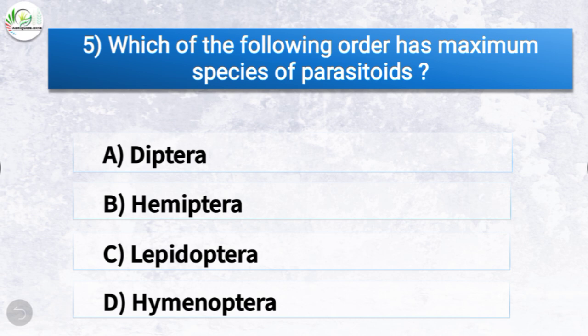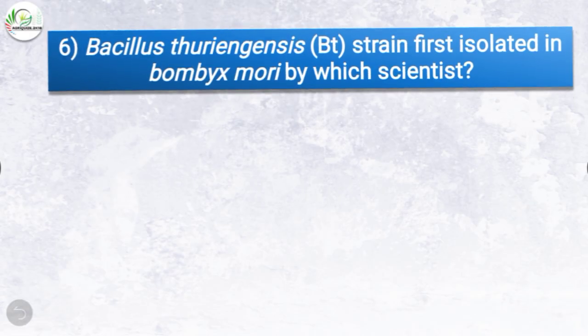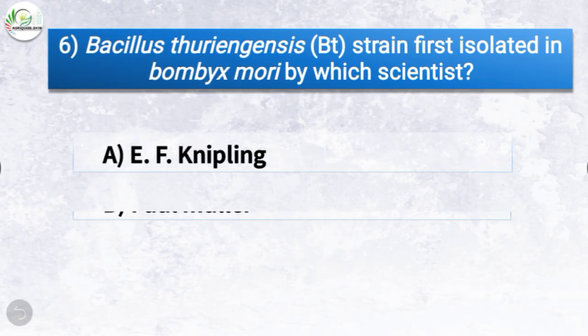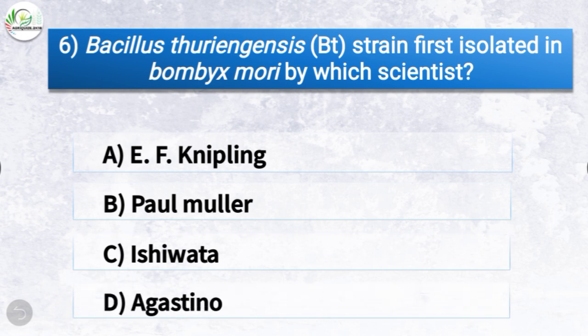Question number five: which of the following order has maximum species of parasitoids? The options are Diptera, Hemiptera, Lepidoptera, or Hymenoptera. The correct answer is option D, Hymenoptera. So among the following orders, Hymenoptera has maximum species of parasitoids.